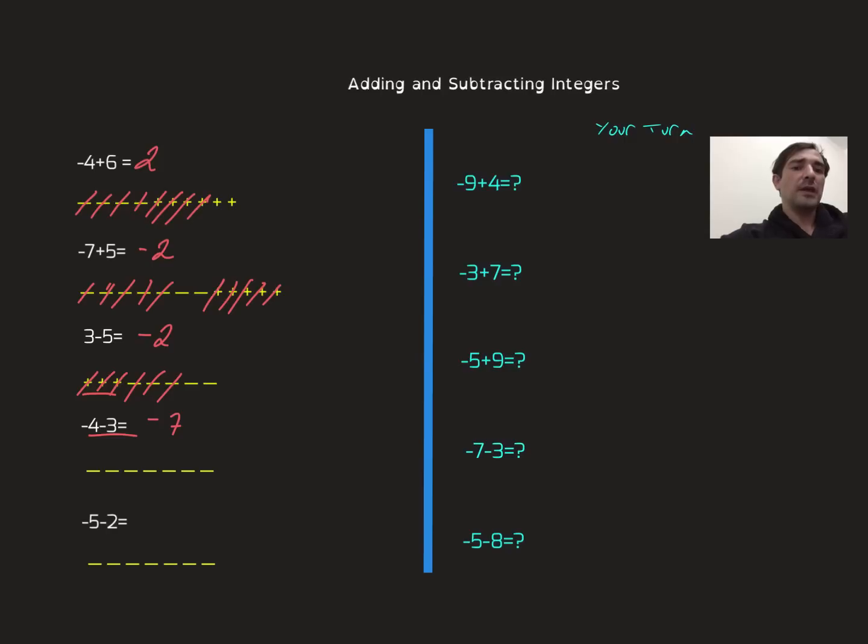Here we have a similar example. Both of them are negative signs, so negative 5, negative 2. Let's look at this: 1, 2, 3, 4, 5, 6, 7. I have negative 7 for this one.